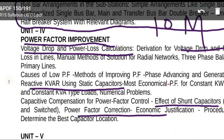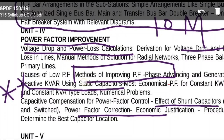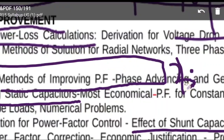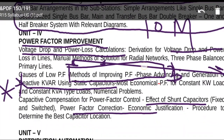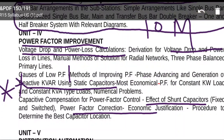Ten-mark questions will come from KVAr rating of capacitor banks. The three methods of improving power factor are static capacitors, synchronous condensers, and phase advancers. This topic may appear as a 2-mark or 10-mark question. A numerical problem involving star and delta configurations is also important — you must definitely prepare these two questions from Unit 4.